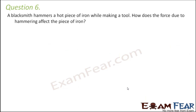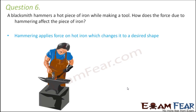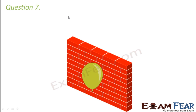Question number six: a blacksmith hammers a hot piece of iron while making a tool. How does the force due to hammering affect the piece of iron? Hammering applies a force on the hot iron which changes it to a desired shape. When the iron is very hot it is flexible enough to take any shape, but once it becomes cold it becomes extremely hard. As long as the iron is hot, applying force through hammering results in a change of shape, allowing you to make the tool you want.